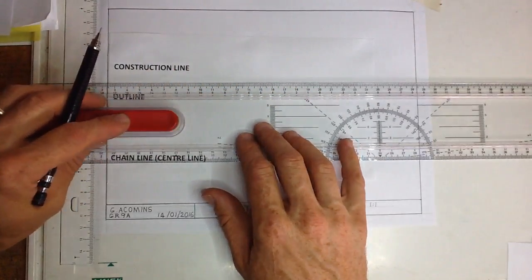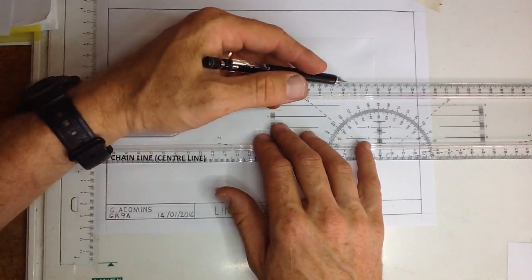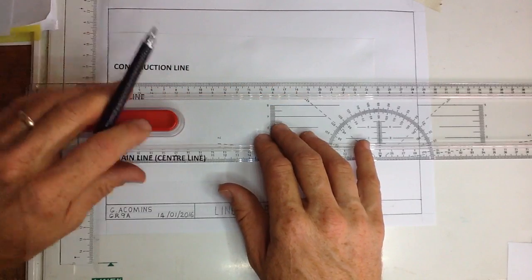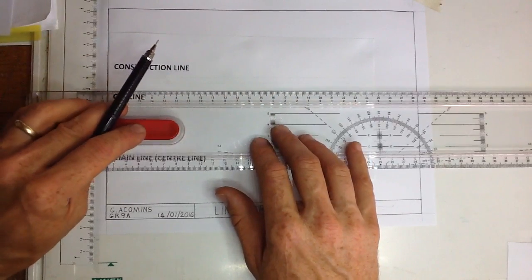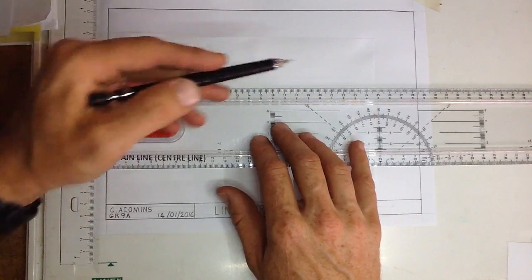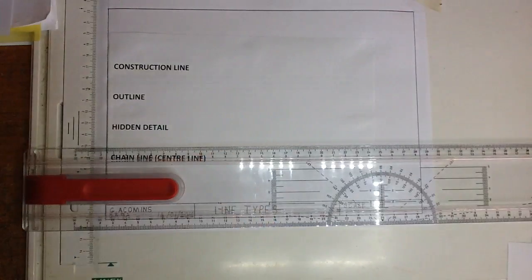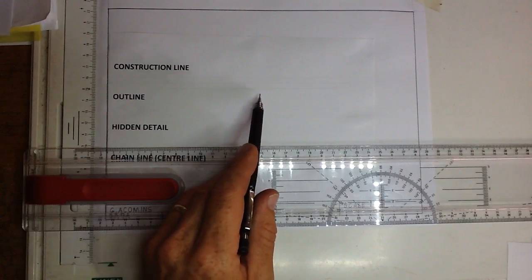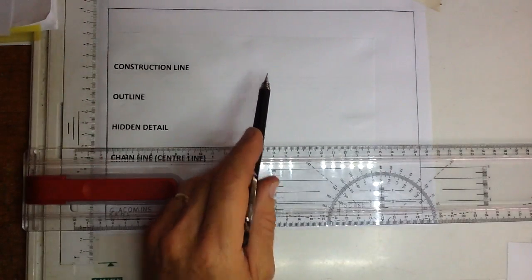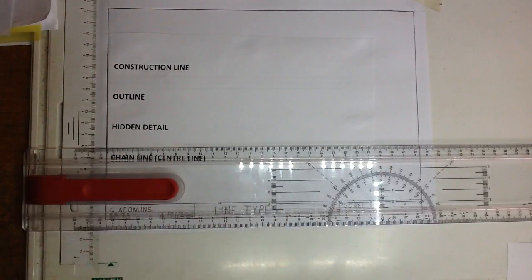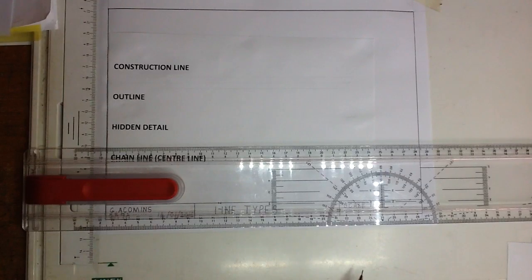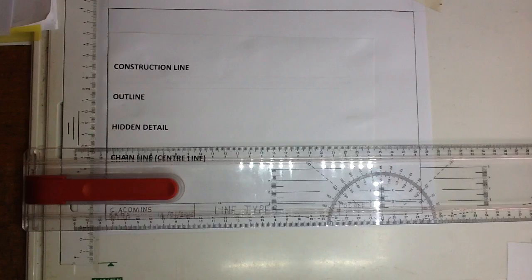Note how I'm holding the pencil to draw the construction lines — I'm not holding it very firmly. I'm literally just dragging it across the page and if you look very closely you'll see incredibly faint lines. They say that you shouldn't be able to see those lines from about an arm's length away, that's how light they are.